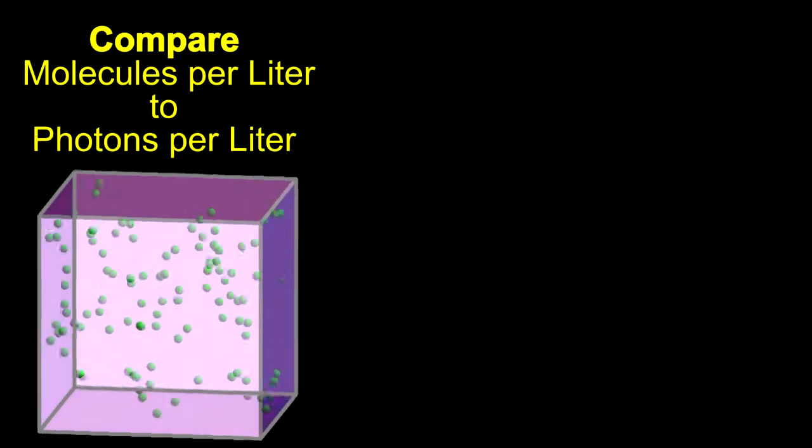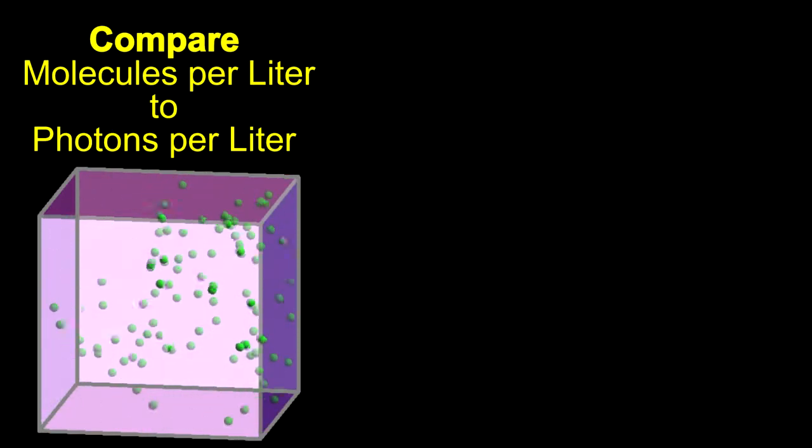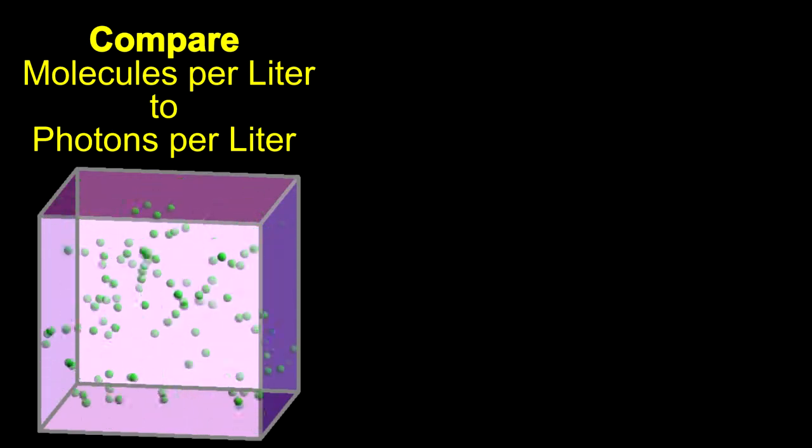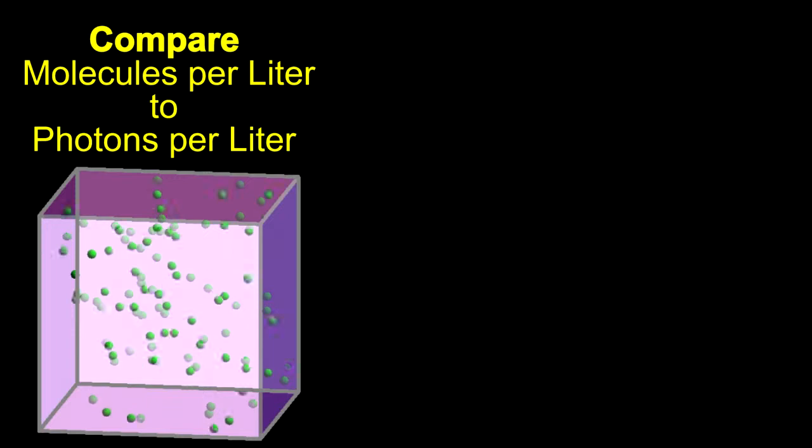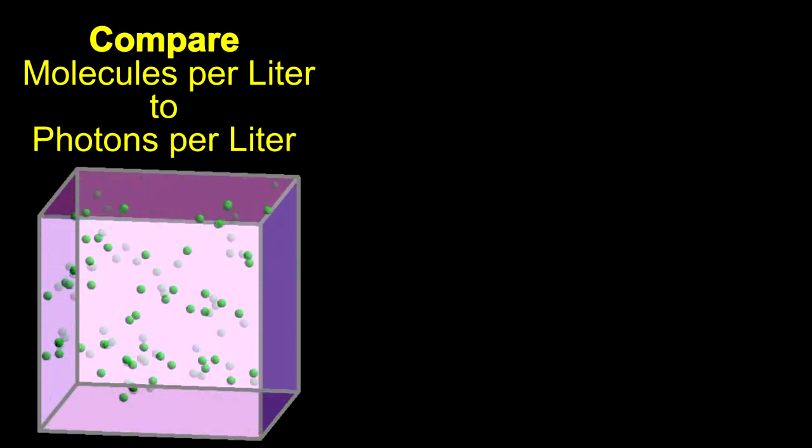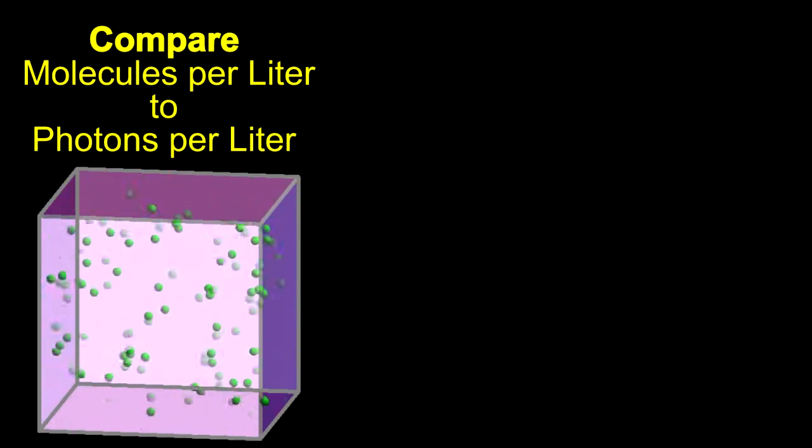Let's begin by comparing the number of molecules with the number of photons in the same volume. Here's an animation of how gases are usually explained in high school chemistry class. The molecules are represented as little balls bouncing around inside a container. Their speed is related to the temperature of the gas. The pressure of the gas comes from molecules colliding with the container.